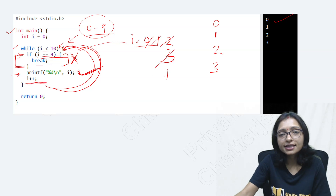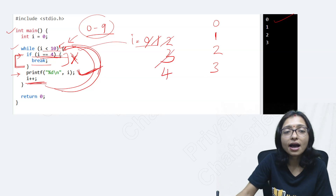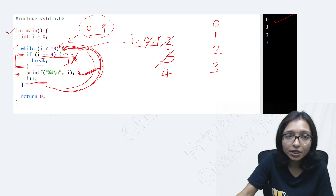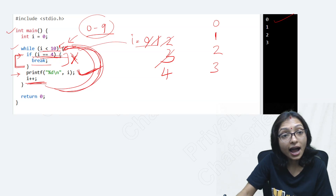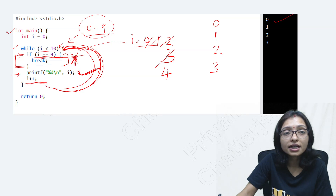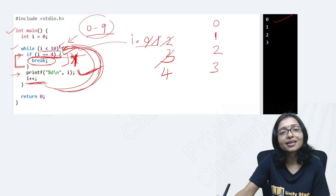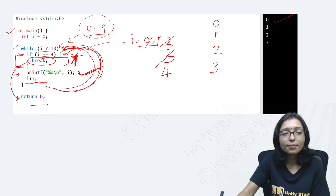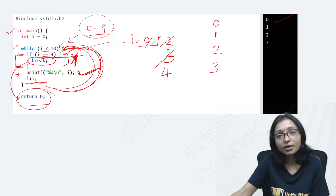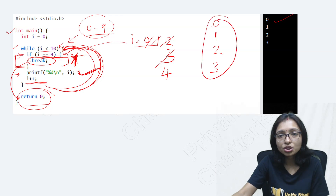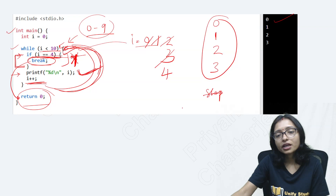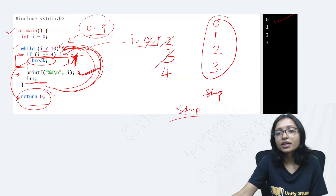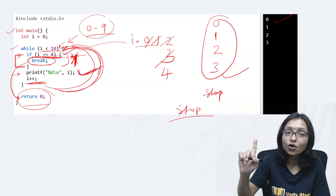After that, i++ updates 3 to 4. It comes back to the loop. i less than 10? Yes. i equals 4? Yes — now this condition is true. As the condition is true, break executes. Break means come out from the loop. This is the while loop; it exits the loop and returns. So after printing 0, 1, 2, 3, the program stops. That's why your answer is 0, 1, 2, 3.